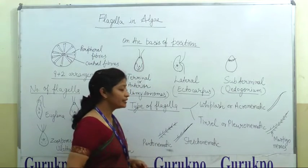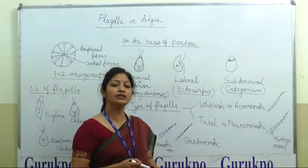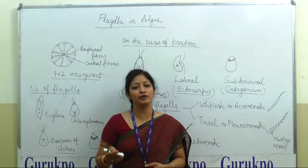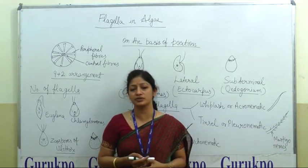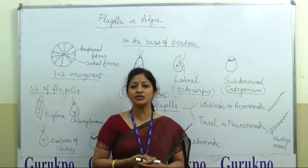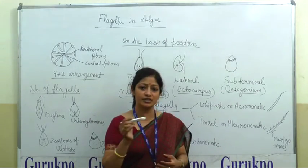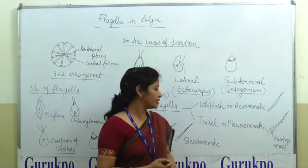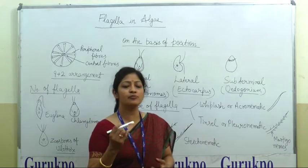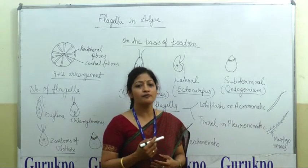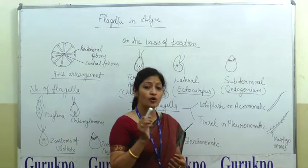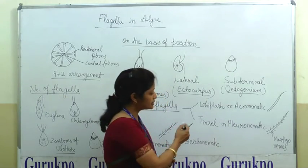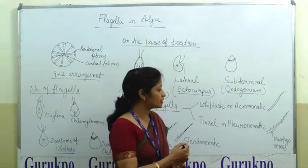Another important criteria is the type of flagella. In Algae, two types of flagella are mostly found: one is Whiplash and another is Tinsel type. In the Whiplash type, the surface of the flagella is smooth — it is also called Acronimate. In the Tinsel type, small hairs are present on the surface of the flagella, and these small hairs are called Mastigonemes. Tinsel type is also called Pleuronimate.